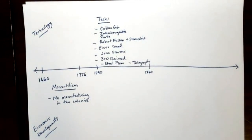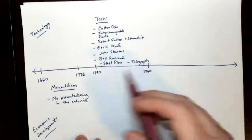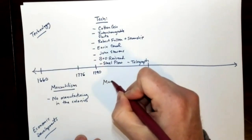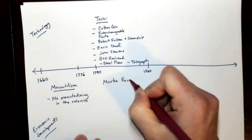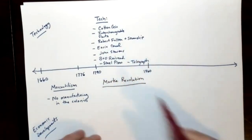All of these inventions are really important because there are some that are going to help mechanize the United States, some that improve transportation such as the steamship and the railroad, mass production of food in the form of the steel plow, and better communication. What this technology does is it allows for the rise of something called the market revolution. This time period — antebellum America, the period before the Civil War — is economically dominated by this market revolution.